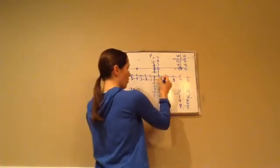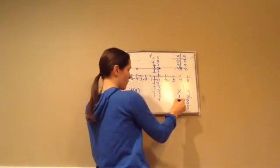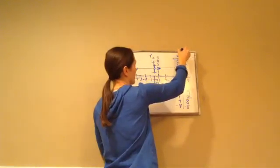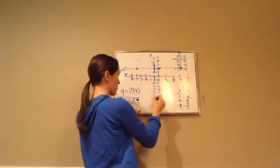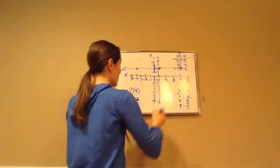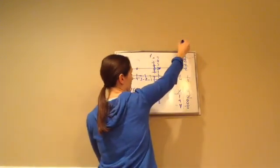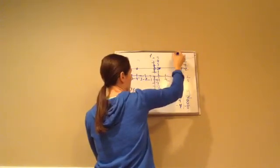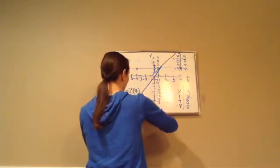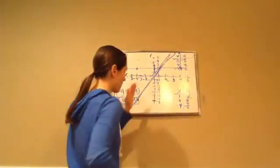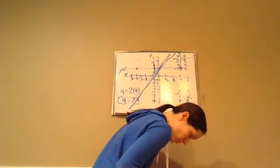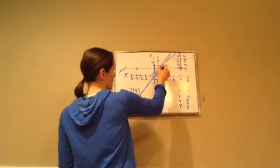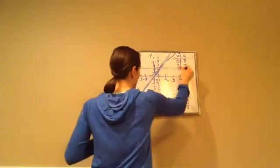Now let's graph the points for y equals 2x. Point (1, 2) goes here; (4, 8) goes way up — I don't quite have enough room, so I'll approximate; and (-4, -8) goes down there. Drawing a line through those gives us y equals 2x. If you have graph paper, it's easy to follow the lines. So those are the two equations graphed on the same system — that is Lesson 51.